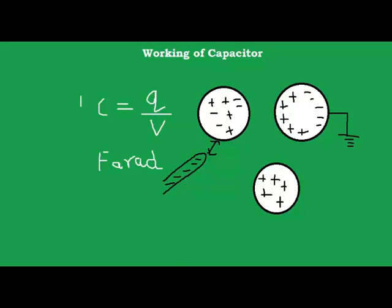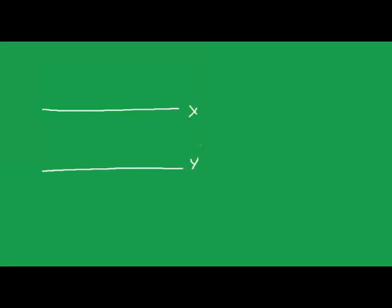Now let me construct a capacitor. A capacitor consists of two metal plates — this is plate X and this is plate Y. These metal plates are kept apart by a small distance d. Plate X is given the charge plus Q, so plate X is positively charged.